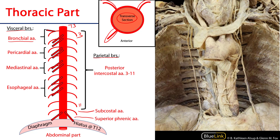These bronchial arteries have quite a variable set of origins. The left two bronchial arteries are going to generally leave at about the T5 level, so they are direct branches of the thoracic part of the descending aorta. The right bronchial artery is generally either a direct branch of the right third posterior intercostal artery or a branch of the superior left bronchial artery — those are the two most frequent origins for the right bronchial artery.